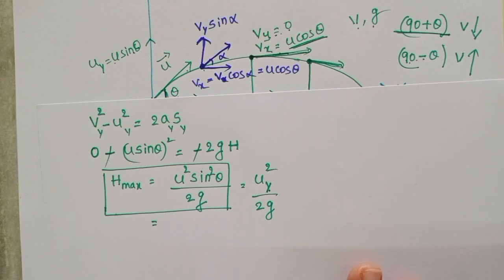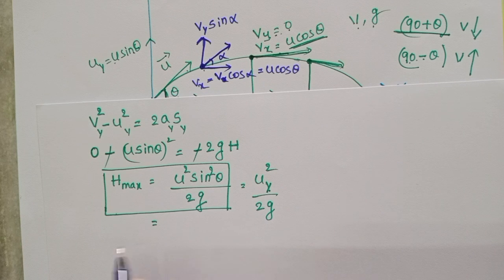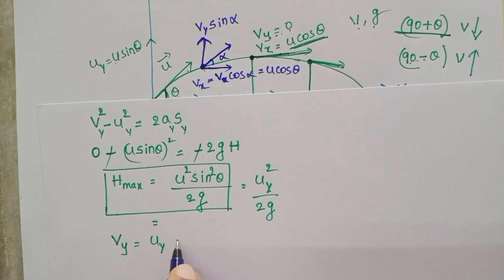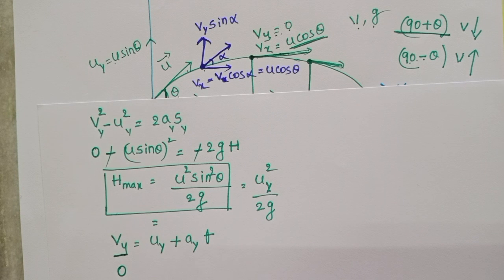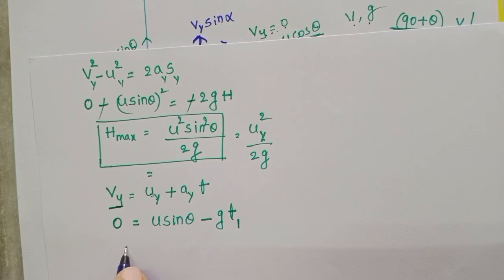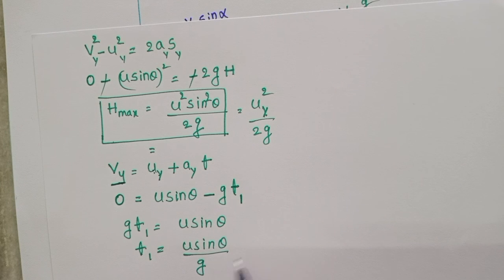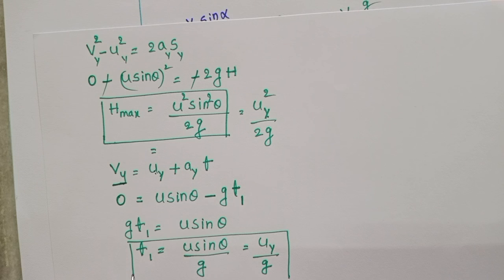Now let us find the time of ascent — the time taken by the projectile to reach the maximum height. Using v_y = u_y + a_y · t: at maximum height vertical velocity = 0, so 0 = u sin theta − g · t1. Therefore, time of ascent t1 = u sin theta / g. In one-dimensional motion this is u/g, but in oblique projectile motion it is u sin theta / g.